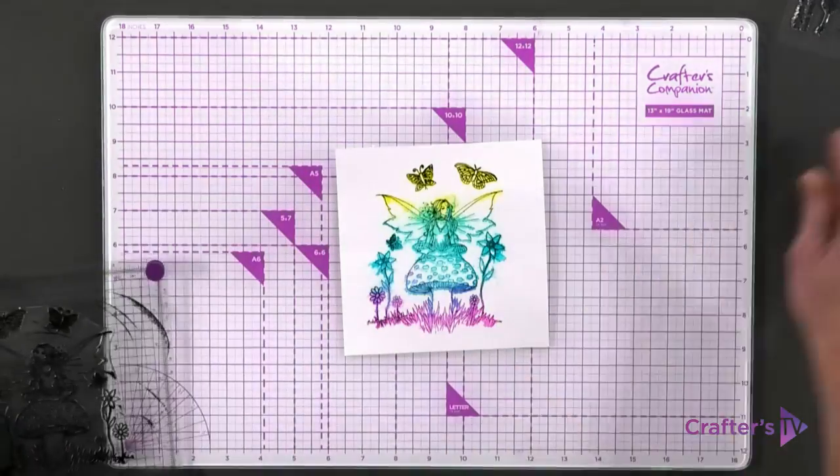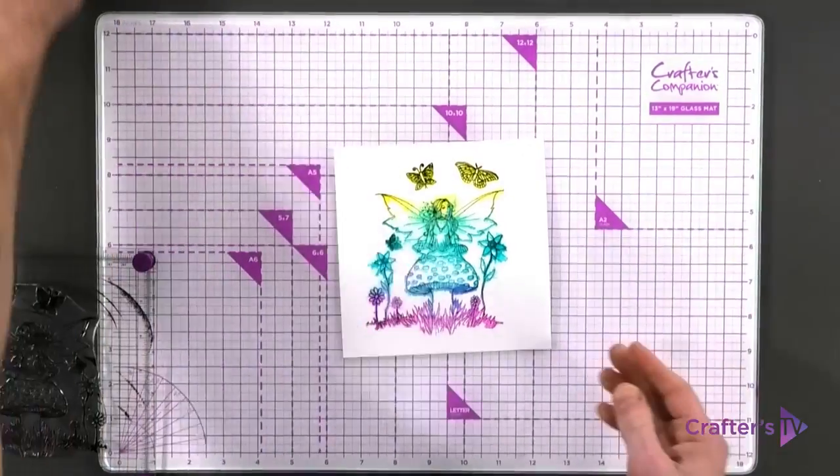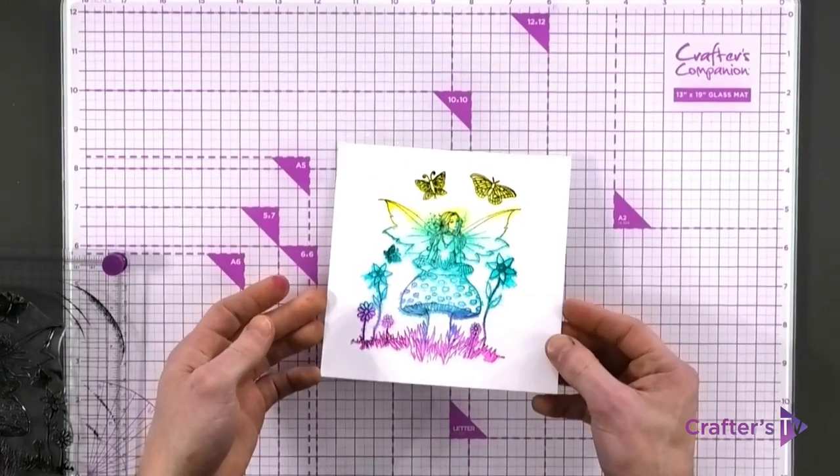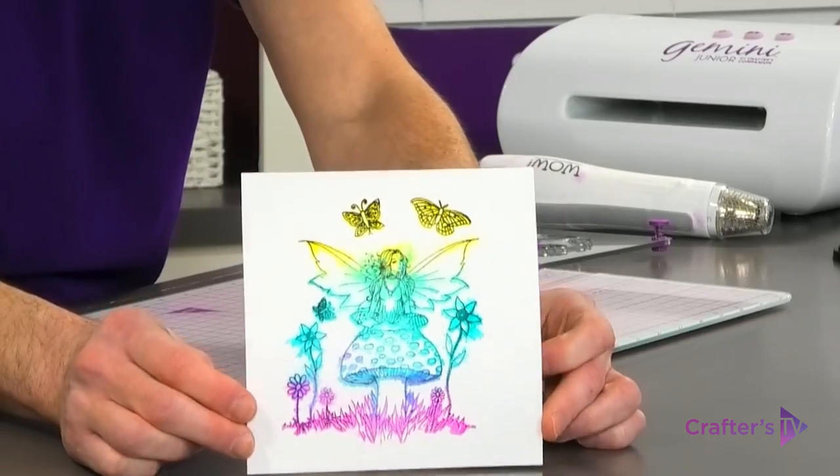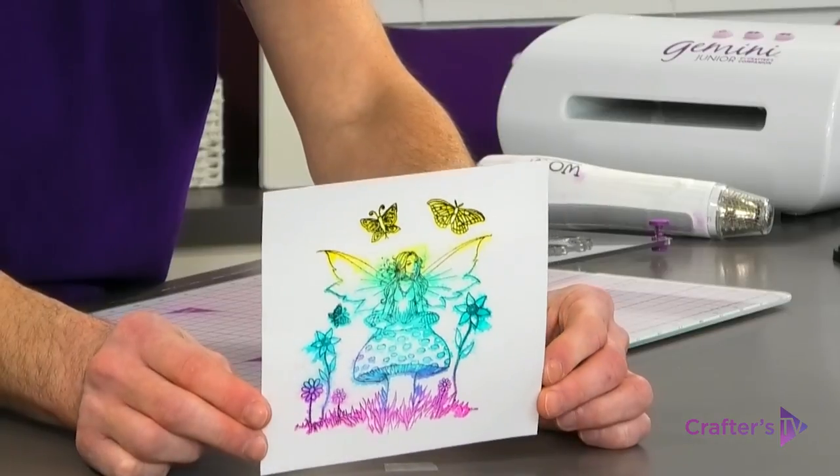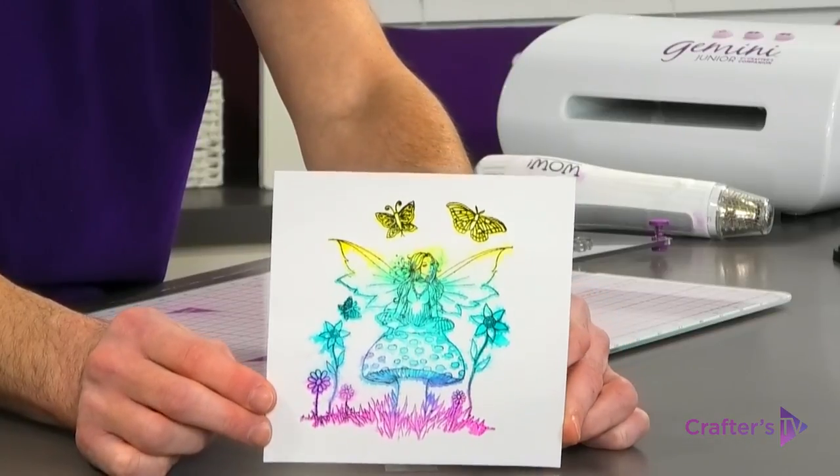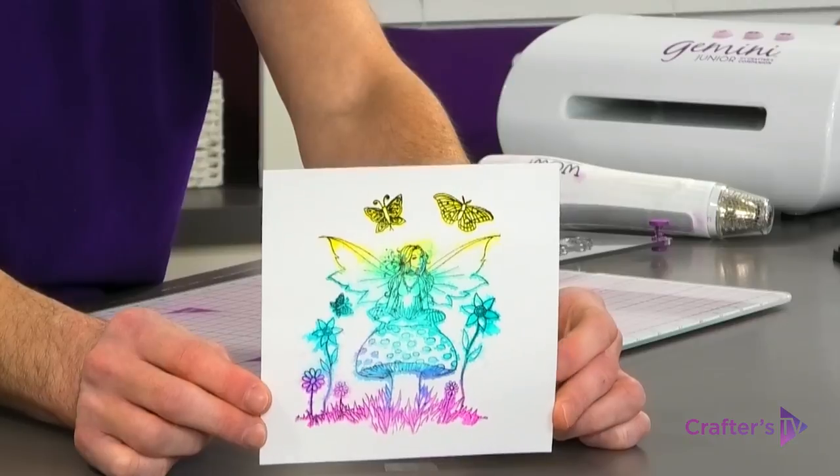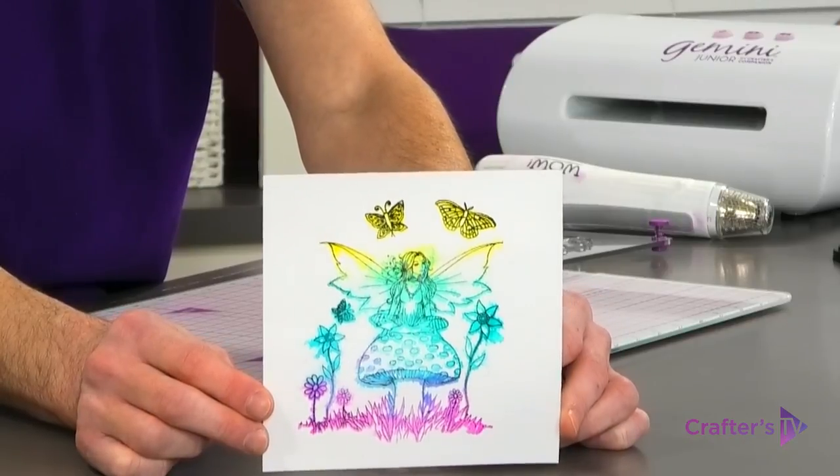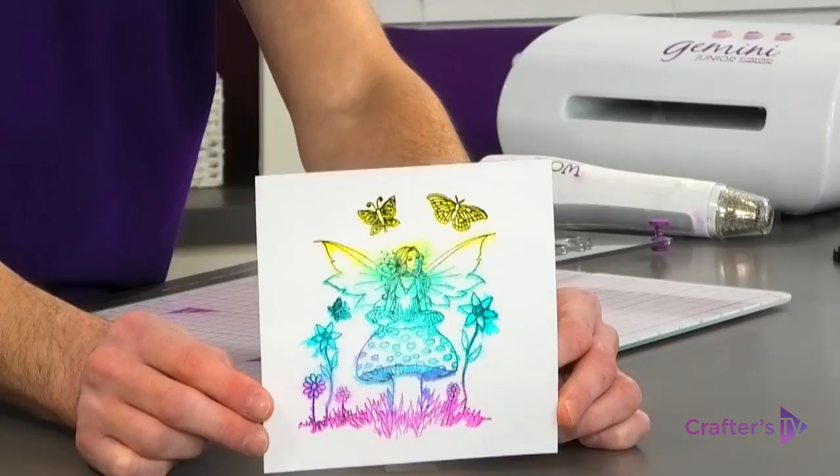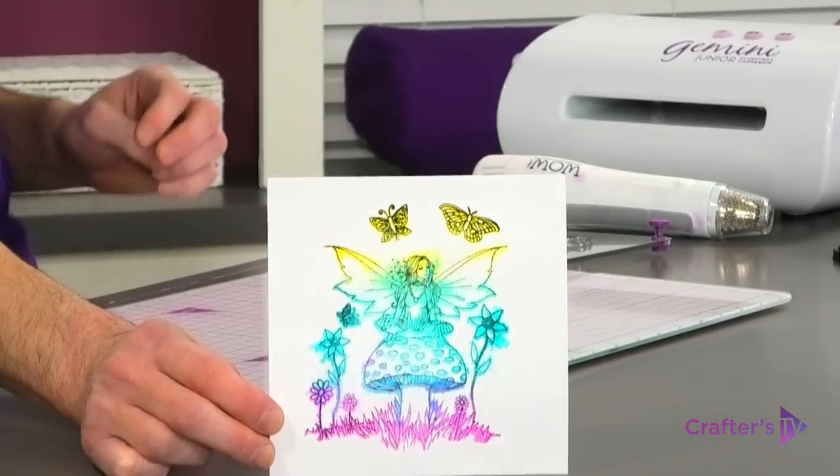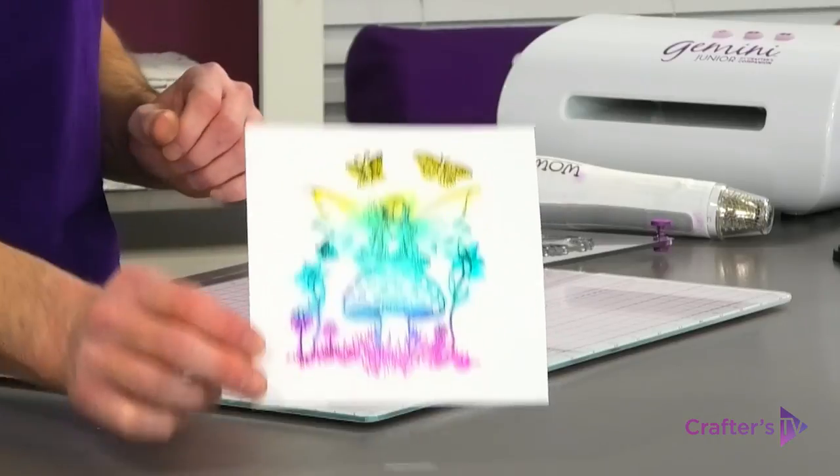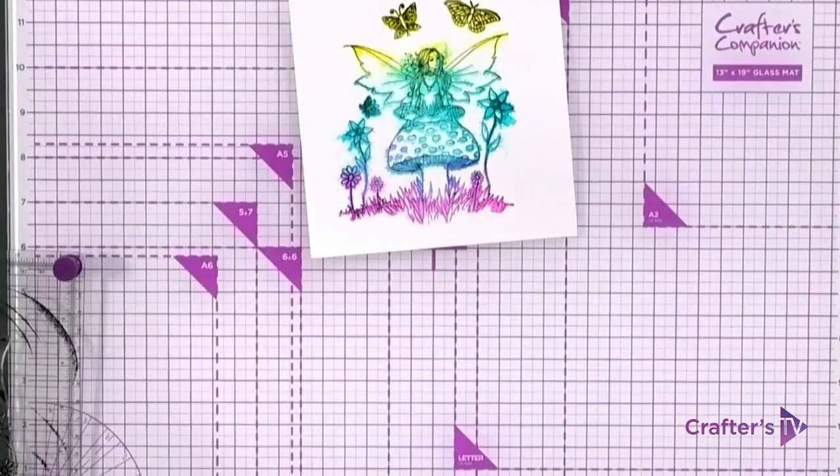We've got that fine detail, that gorgeous detailed line all the way around of the stamped image, but with that very rustic color effect background. If you're not too comfortable with color and shading but want that vibrancy, that's a good way of doing it. You don't need to be neat or precise, but you'll still get this really lovely effect.